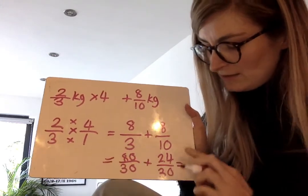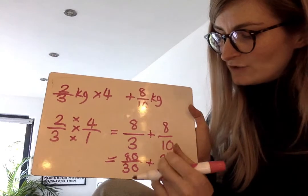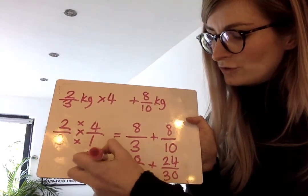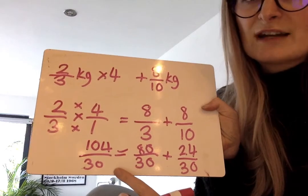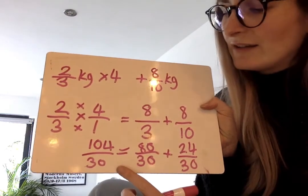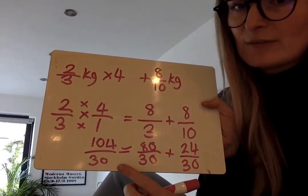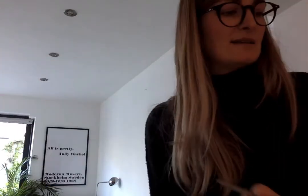So three into 30 is times 10, so eight times 10 is 80. And then ten into 30 is times three, eight times three is 24. And I can add these together now. 80 add 24 is 104 thirtieths. Oh a horrible horrible fraction. Can you simplify this fraction? Yes you definitely can. I'm not going to simplify it for you. I want you to do it for me. That was the answer to question two.